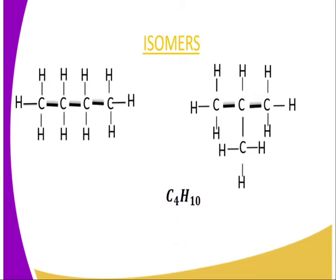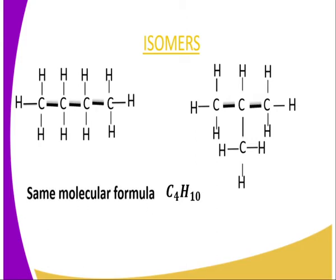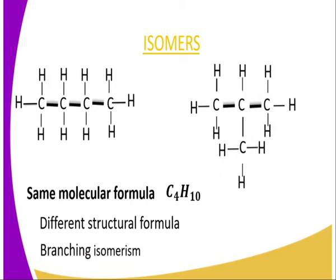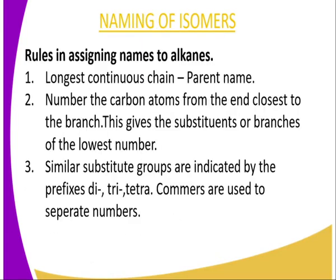Looking at the molecular formula of both structures, you can see that in each structure we have four carbon and ten hydrogen atoms. That is, they have the same molecular formula but a different structural formula. Compounds that have that kind of relation — same molecular formula but different structural formula — are the ones which we refer to as isomers.